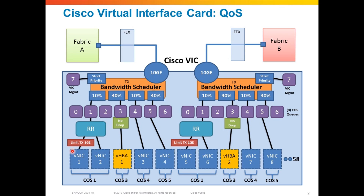Let's take the example with VNIC 1 and 2. I assigned them both to the same class of service, class of service 1, which has a 10% minimum bandwidth. For two VNICs in the same class of service, there will be a round-robin scheduler that puts those frames into the queue. So both VNIC 1 and VNIC 2 are going to get fair access to cost-based queue 1, and they will have a 10% link guarantee on the wire under congestion. Collectively, both VNICs will get 10% of minimum bandwidth, and the round-robin scheduler ensures fair sharing of that 10%.